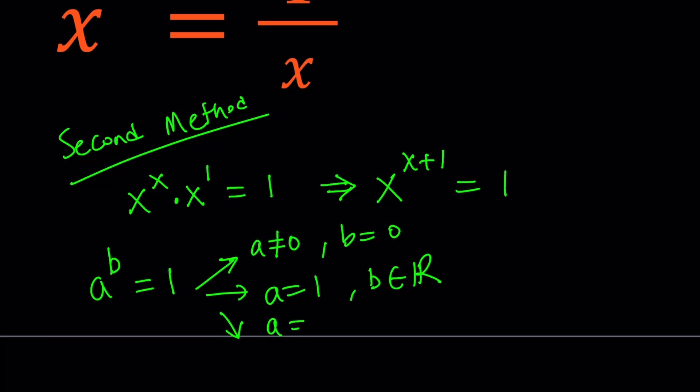And then for the third case, we can have a equals negative 1 and b equals even. So those are the three cases that we need to check. Let's go ahead and check each one.